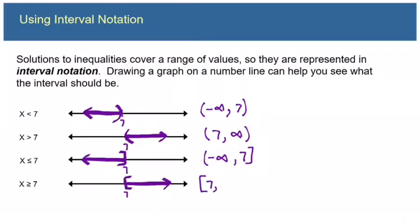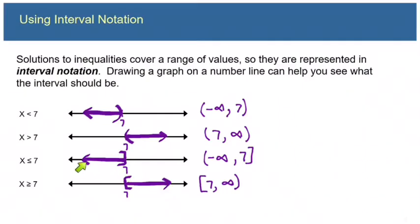For x is greater than or equal to seven, we start with the seven, shade where numbers are greater than seven, and put a bracket for the or-equal-to situation. The interval notation goes from seven to infinity. Notice in every case, the interval notation goes from left to right.